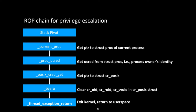Here is the ROP chain for privilege escalation. First, use a stack pivot to control the stack and get a pointer to the struct proc of the current process. Then get the ucred from proc and set CRUID, CRRUID, and CRSVUID to zero. After that, use a thread exception to exit kernel mode and return to user mode, then execute a shell with root privilege.